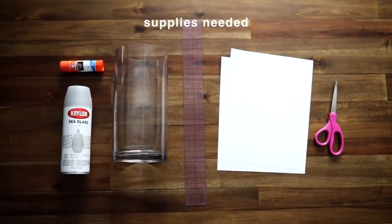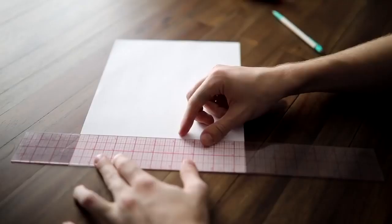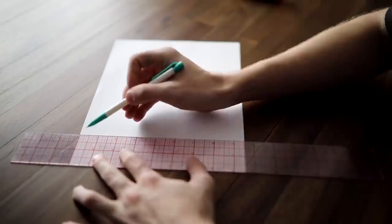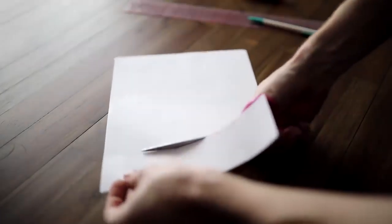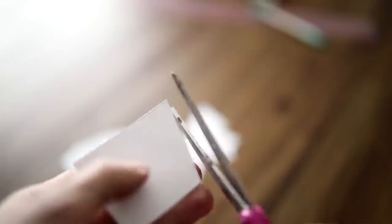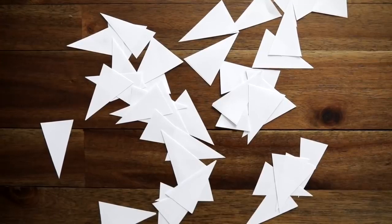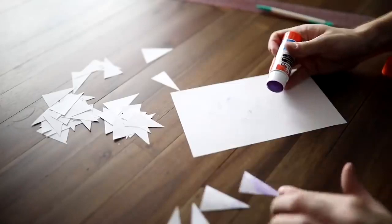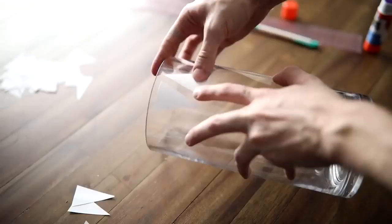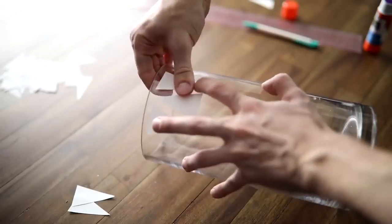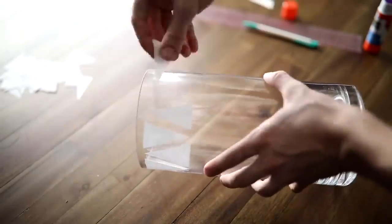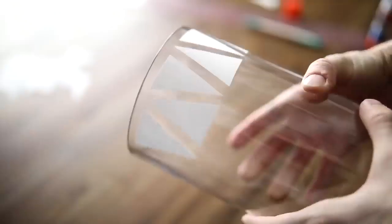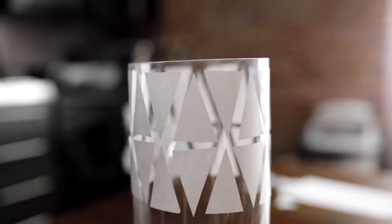DIY number two - all you're going to need is some sea glass spray paint, a glue stick, a vase, ruler, paper and scissors. I absolutely love the look of this frosted glass vase. I thought it looked so expensive and very West Elm-esque. What I did was cut out two inch strips from paper and just cut out some triangle masks. Basically you can cut out any shape you would like out of just regular old printer paper and apply a bit of Elmer's glue stick to the back of that and just let the Elmer's glue stick dry.